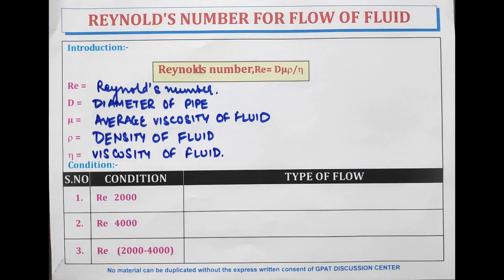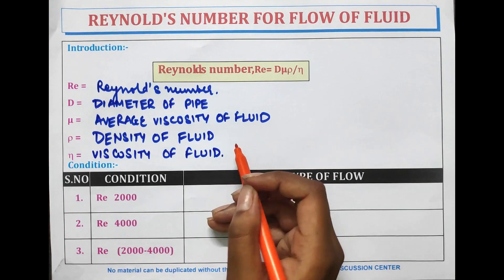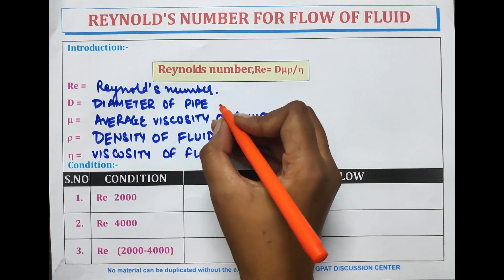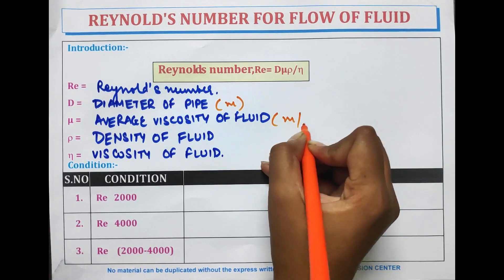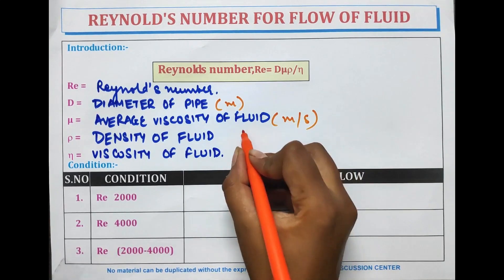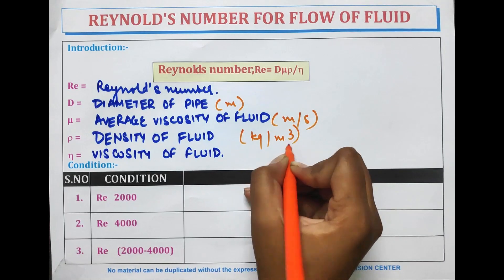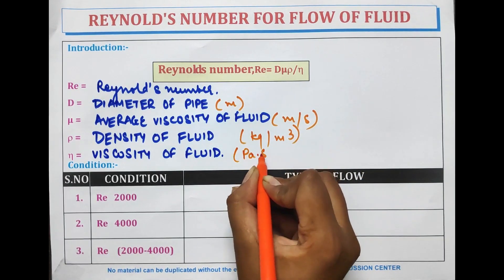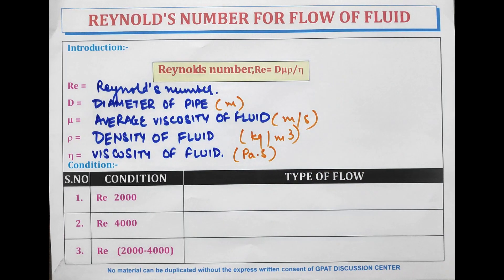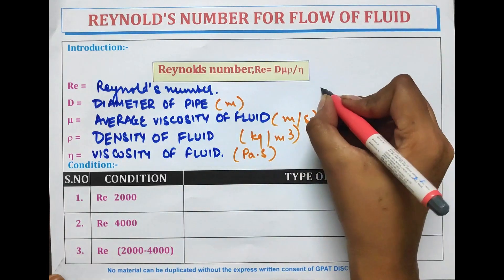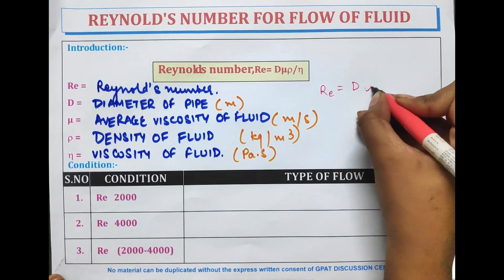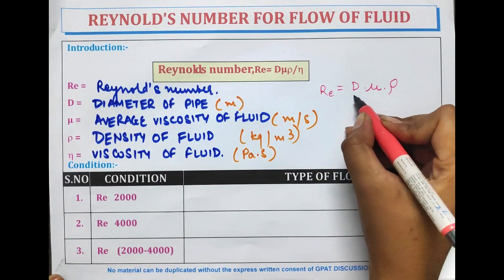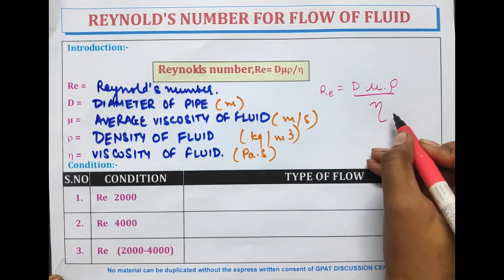The units are as follows: Reynolds number is dimensionless, diameter of pipe is expressed in meters, average velocity is in meters per second, density is in kg per meter cube, and viscosity is in Pascal seconds. The Reynolds number formula is: RE equals diameter of pipe multiplied by average velocity of fluid multiplied by density of fluid, divided by viscosity of fluid.